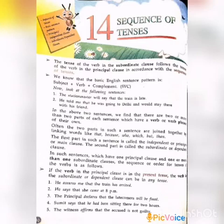First we should know about what tenses are. Tenses have three types: present tense, past tense, and future tense. You know them very well from lower classes. The previous lesson we learned about the pattern of sentence. The main pattern or structure of sentence is S plus V plus O. Here they are given the pattern S plus V plus C.